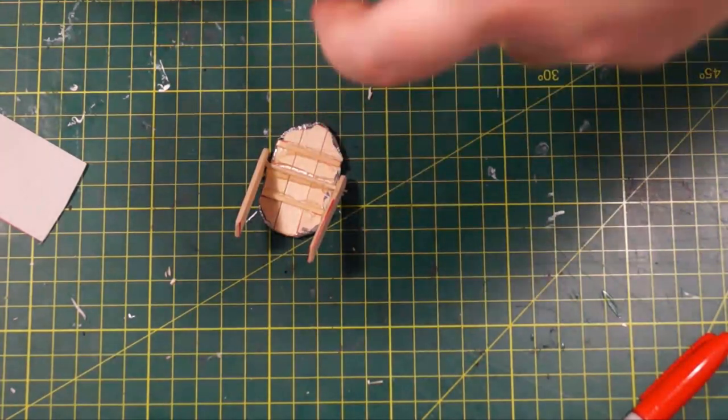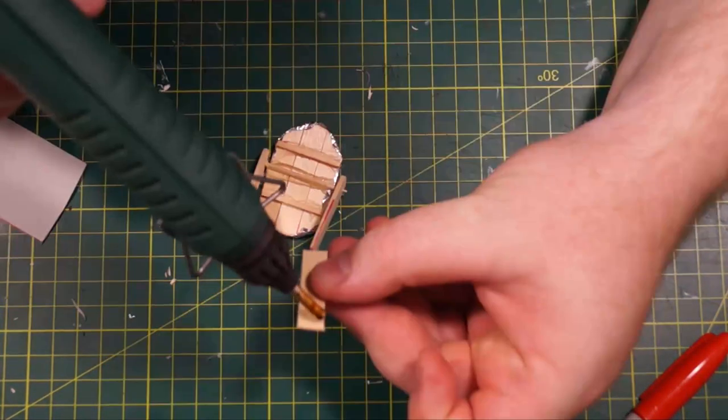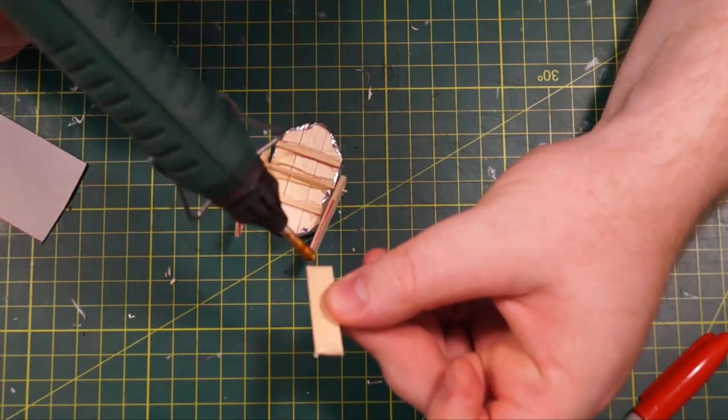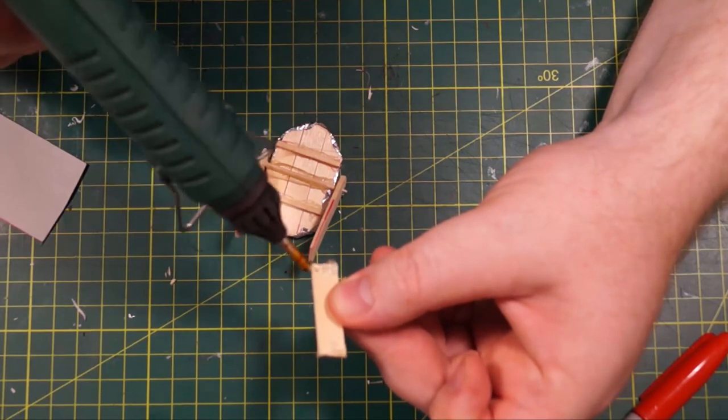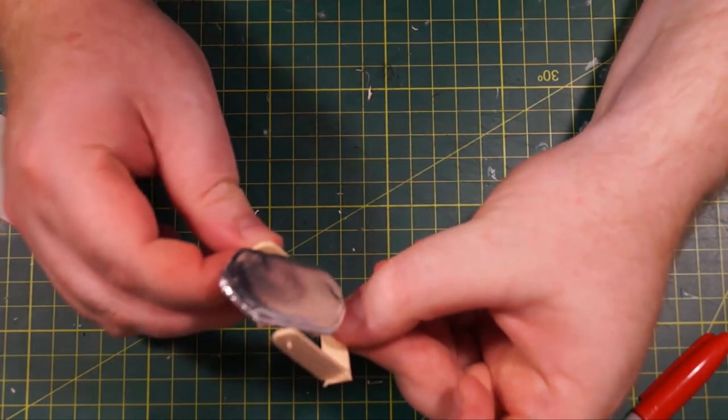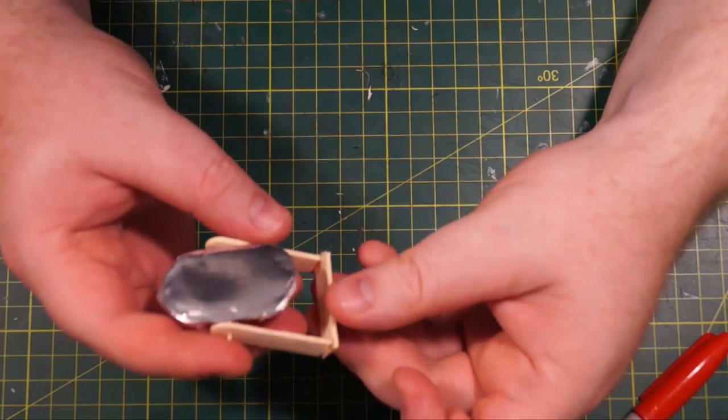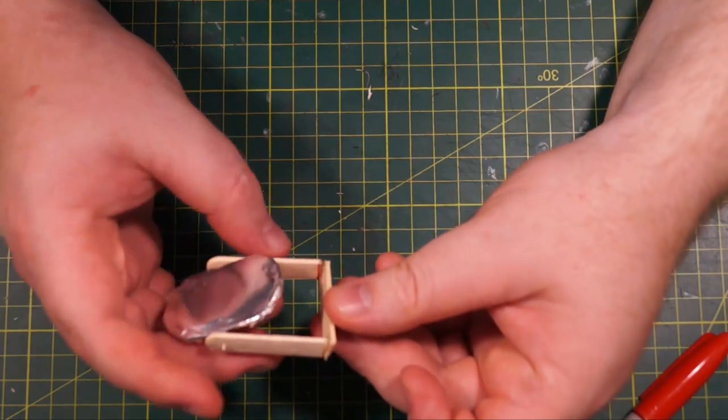And then with another lollipop stick, we're just going to create a base for it to stand on. Hot glue on each side of that and then push the legs of that stand onto that hot glue. And there we go.